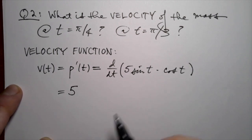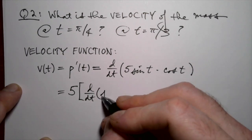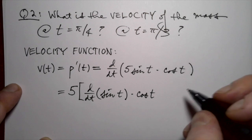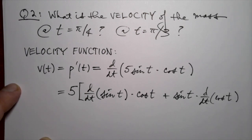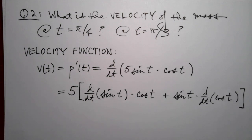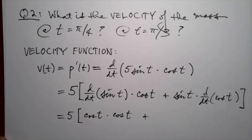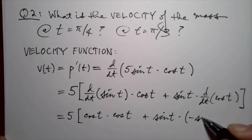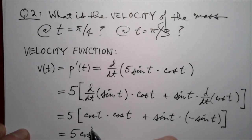The constant 5 comes outside. Then by the product rule: derivative of the first function (sine) times the second (cosine), plus the first function (sine) times the derivative of the second (cosine). The derivative of sine is cosine, so the first term is cosine t times cosine t. The derivative of cosine is minus sine. So the velocity function simplifies to 5 cosine squared t minus 5 sine squared t.